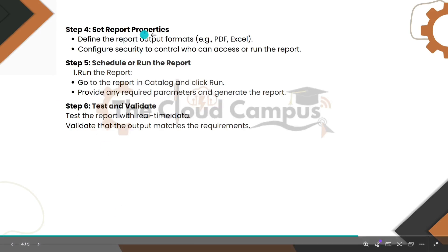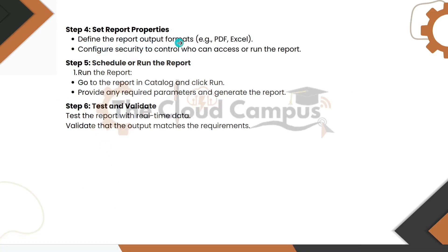Step four: set report properties. Define the report output formats — for example PDF, Excel, XML, or CSV. Configure security to control who can access or run the report. Step five: run or schedule the report. Go to the report in the catalog and click run. Provide any required parameters and generate the report. Step six: test and validate. Test the report with real-time data and validate that the output matches the requirements.